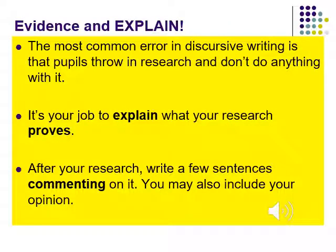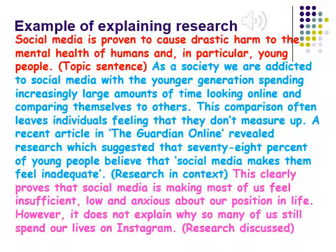Once you have your evidence included in context, you now have to explain it. You can't simply expect the evidence to talk for itself. This is the most common error in discursive writing — people chuck research in and don't really do anything with it. It's your job to explain what your research proves. Thinking about the TEAS acronym: after your topic sentence and evidence, write a few sentences commenting on it, and you may also include your opinion. Let's look at an example which includes a topic sentence, then evidence with some context, and then the explanation of that evidence.